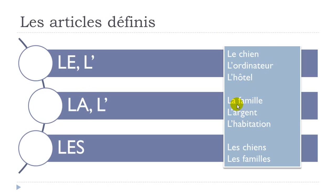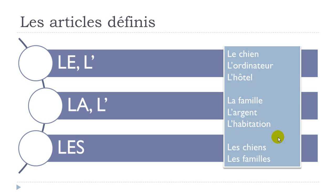For the feminine form: 'famille' (family) has no issue — 'la famille'. Then 'argent' (money) starts with the vowel 'a', so the 'a' of 'la' disappears, giving 'l'argent'. Similarly, 'habitation' starts with 'h', but the first sound you hear is 'a', so for the same reason you get 'l'habitation'.